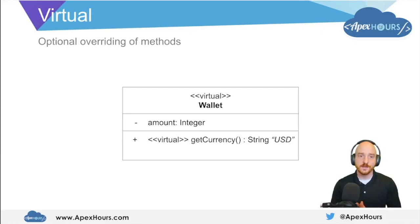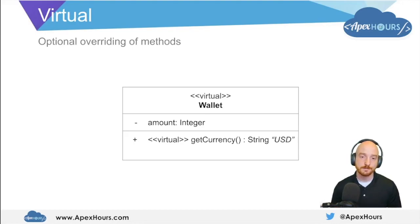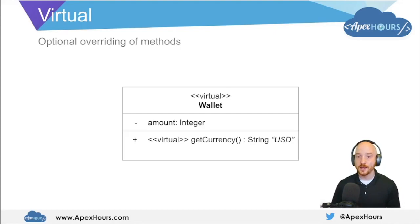A virtual class allows for optional overriding of methods. For example, we have a virtual wallet class with a virtual method called get currency, with a default string value of USD. You could have an extension that changes the currency to Canadian dollars or yen or whatever currency you'd like. The virtual class allows you to define a default that can be overridden by any subclass.